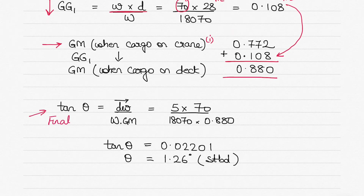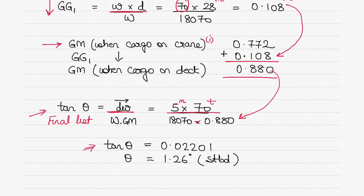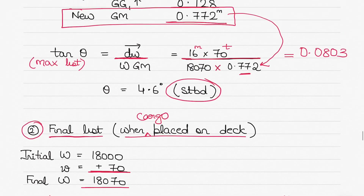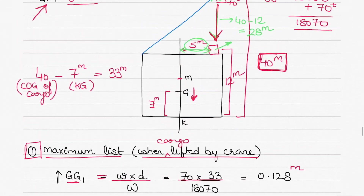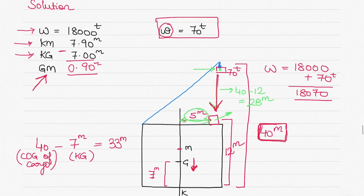The new GM = 0.772 + 0.108 = 0.880 meters. To find the final list when cargo is placed on deck: tan θ = (5 × 70) ÷ (18,070 × 0.880) = 0.02201, therefore θ = 1.26 degrees. The list will still be to starboard because the cargo was placed on the starboard side of the deck.